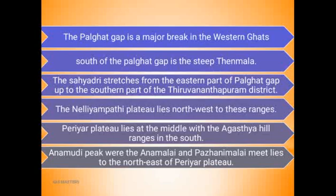To begin the Palakkad Gap, we have to understand this feature. The name of the western range is Sahyadri, also known as Western Ghats.